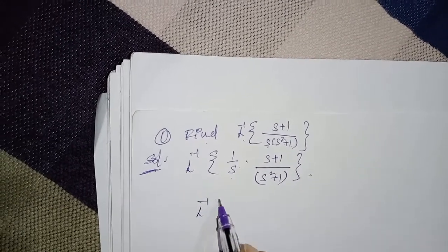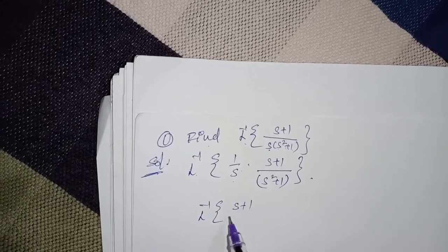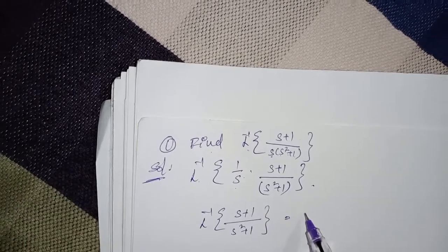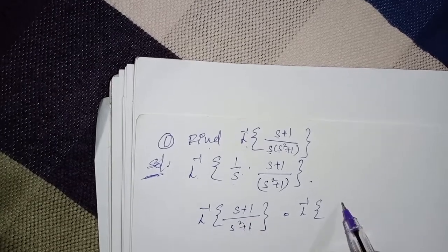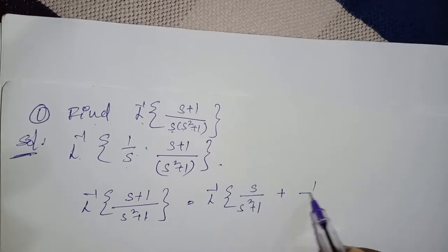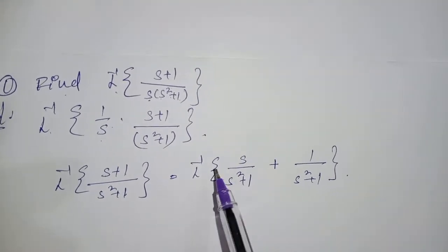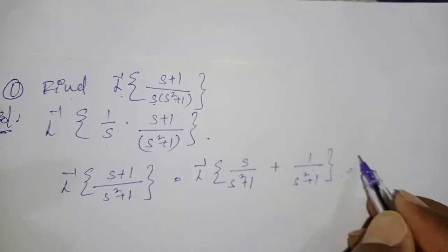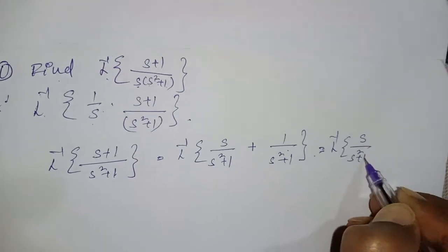Apply the L inverse to this. We have (s+1)/(s²+1). Split the denominator into two parts: s/(s²+1) plus 1/(s²+1). Split the Laplace into the first one and the second one.